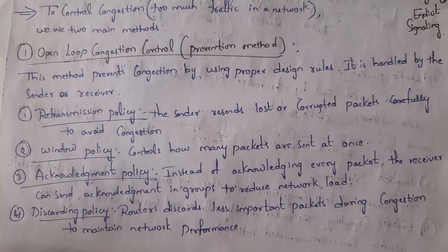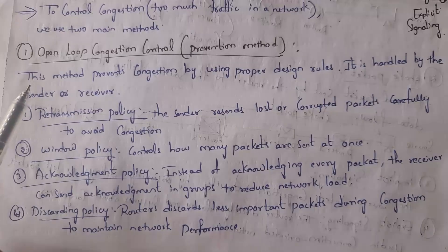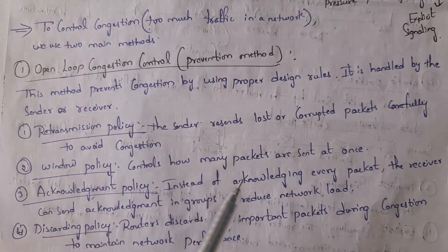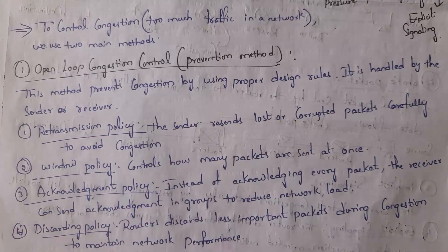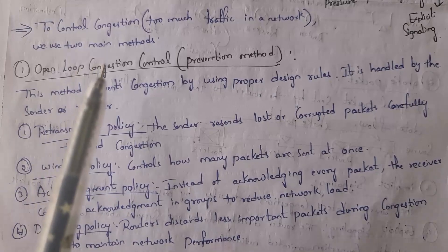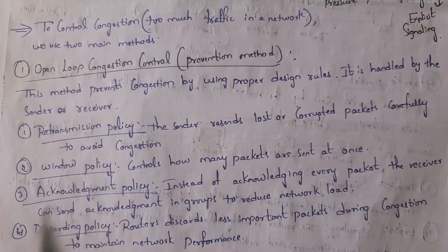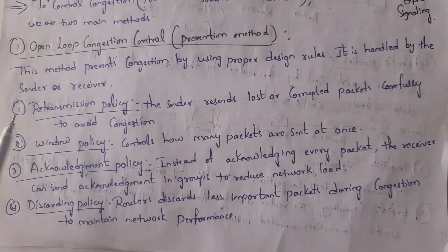First I will explain what is open loop congestion control. We also call it the prevention method. This method will prevent congestion before it occurs — meaning before congestion occurs we will try to avoid it. So this method prevents congestion by using proper design rules, and it is handled by the sender or receiver.